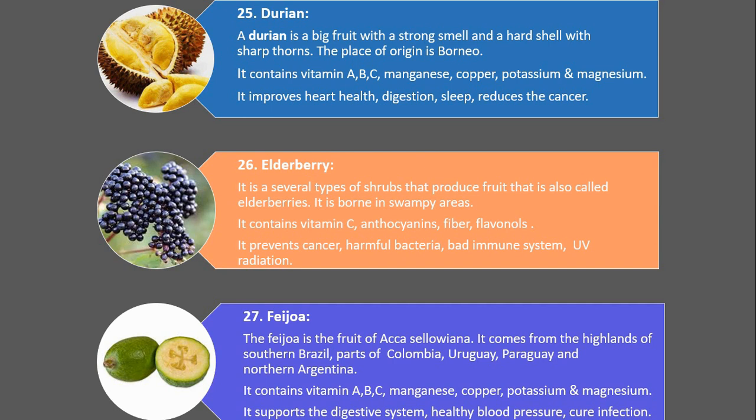Number 27. Feijoa. The feijoa is the fruit of Acca sellowiana. It comes from the highlands of southern Brazil, parts of Colombia, Uruguay, Paraguay and northern Argentina. It contains vitamin A, B, C, manganese, copper, potassium and magnesium. It supports the digestive system, healthy blood pressure, and cures infection.